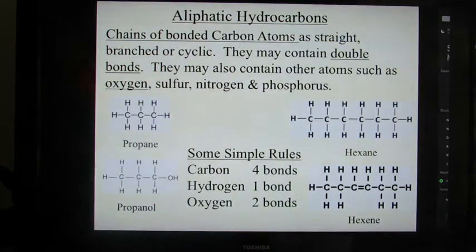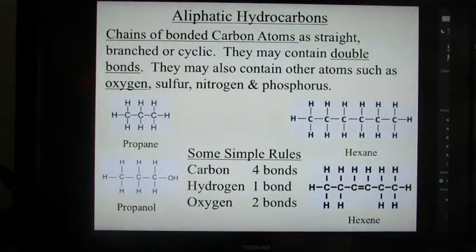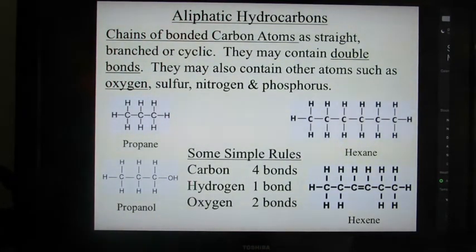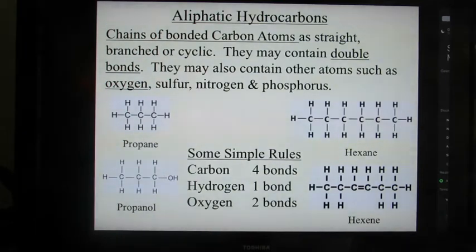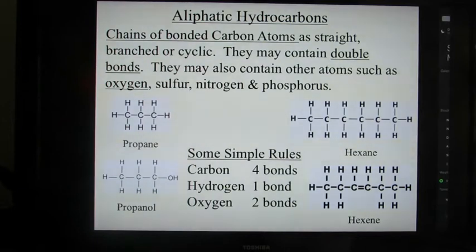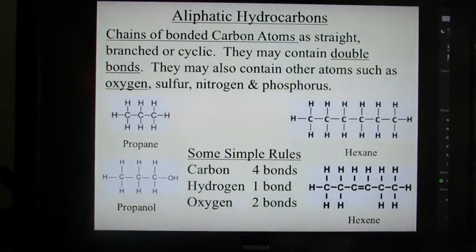The aliphatic hydrocarbons are basically just chains of bonded carbon atoms as straight, branched, or cyclic structures. I don't want to go into too much detail, but I did want to give you a basic understanding, which would be valuable when we're talking about the theories of smell. The straight chains and cyclic branch structures contain double bonds, and they can contain some other atoms such as oxygen, sulfur, nitrogen, and phosphorus. Mostly you'll see oxygen as another component in the odorant molecules.